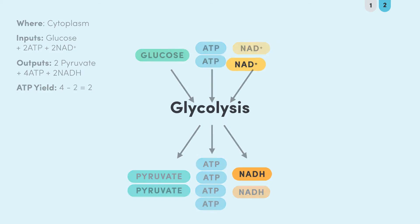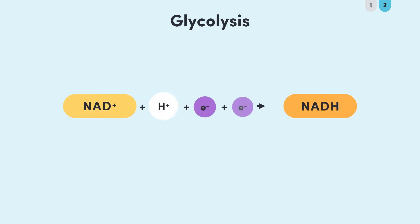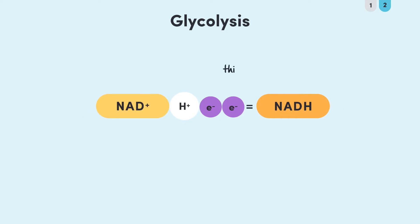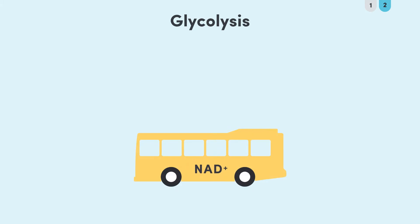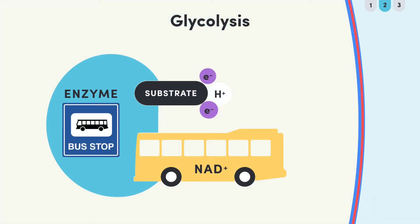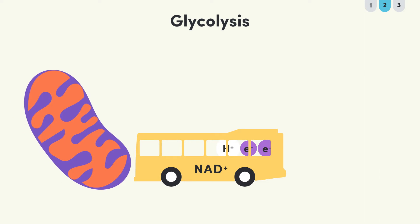You might have noticed some unfamiliar molecules in glycolysis: NAD+ and NADH. We haven't encountered them yet, but this dynamic duo will be popping up quite a bit, so I'll give them a solid introduction now. When NAD+ reacts with a proton and a couple of electrons, it forms NADH. This reaction is reversible, so the proton and electrons can easily be unloaded. Because of this, NAD+ acts kind of like a bus — it picks up a proton and electrons from glycolysis, carries them in the form of hydrogen, and drops them off in the mitochondria, where they're needed in the electron transport chain.